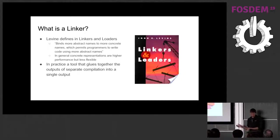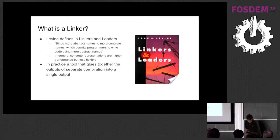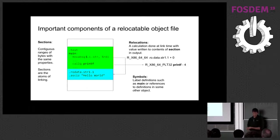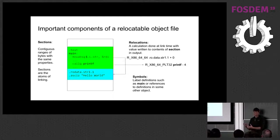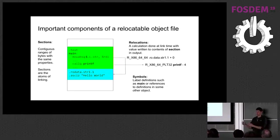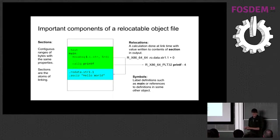Linkers have lots of things coming from the compiler in terms of objects, and they've got to glue them all together and resolve all the references between all the bits. The three main things to remember about an ELF file are: sections, relocations, and symbols. Sections are kind of like the atoms of linking — the linker is generally not allowed to split these up because it doesn't really understand what goes into them. Sections are building blocks that the linker glues together.